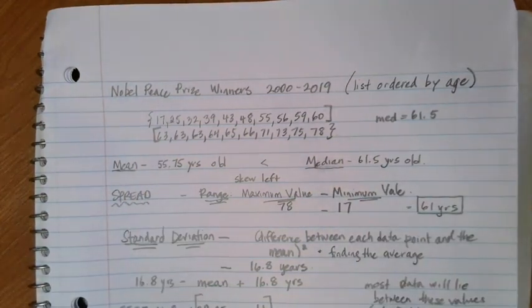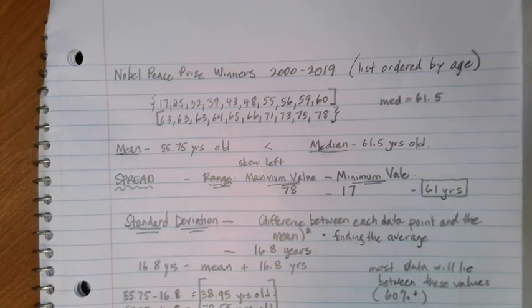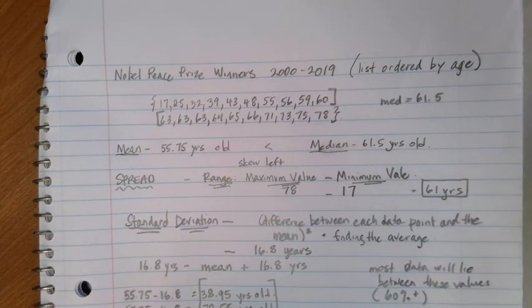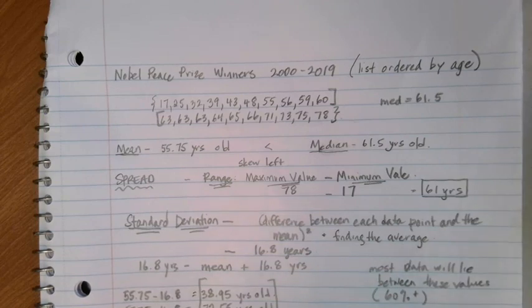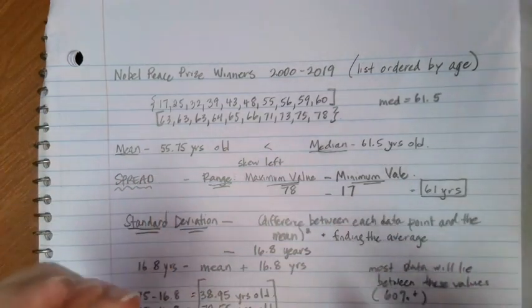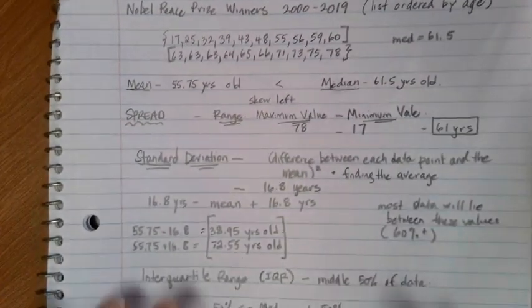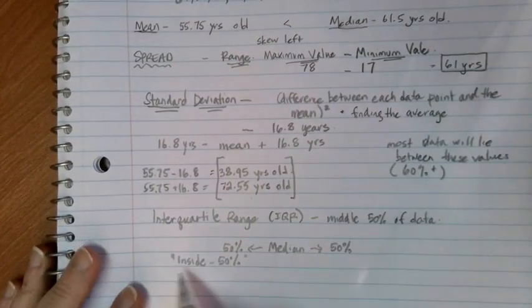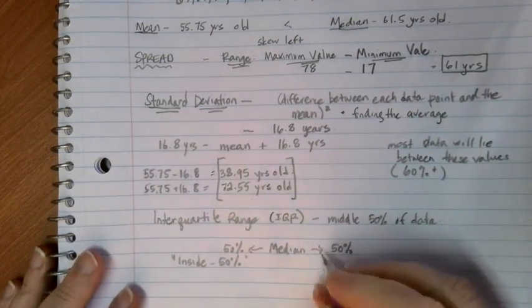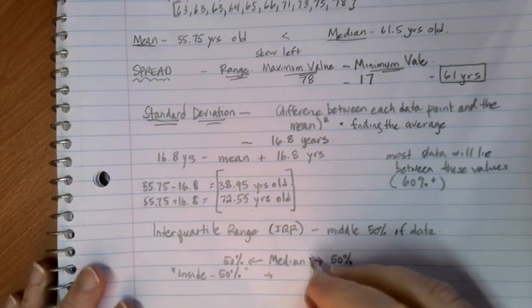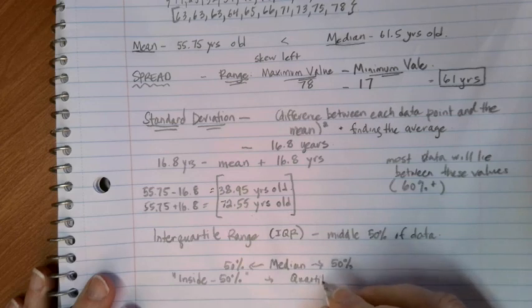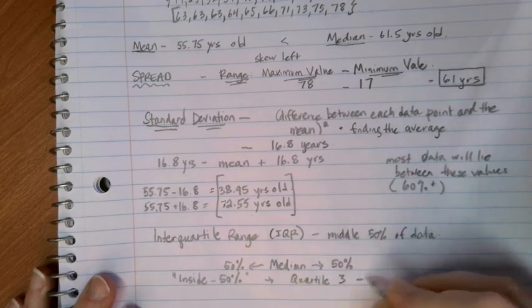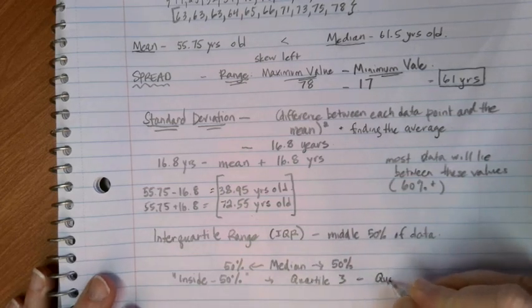Now, if we want to know what the middle 50% of that data is, what we want to do, so the inside 50%, gives us a good idea of again, kind of that central value that kind of gives us a bubble. So we're looking for that inside 50%, and the way that we find that is we're going to take what we call the third quartile and subtract the first quartile.